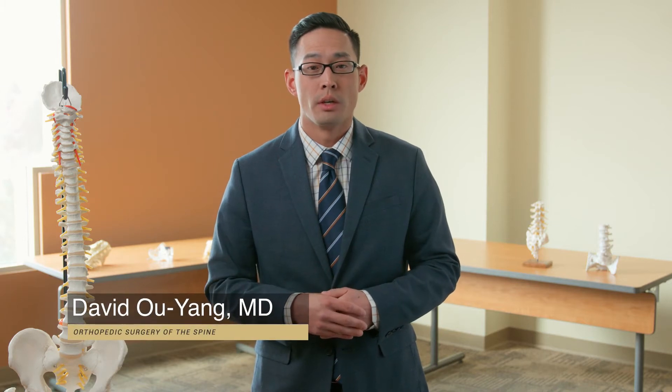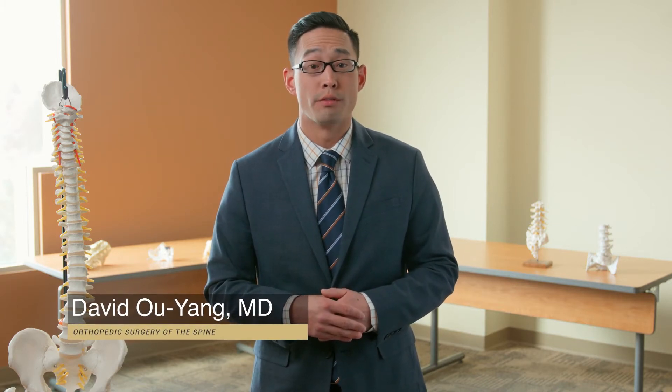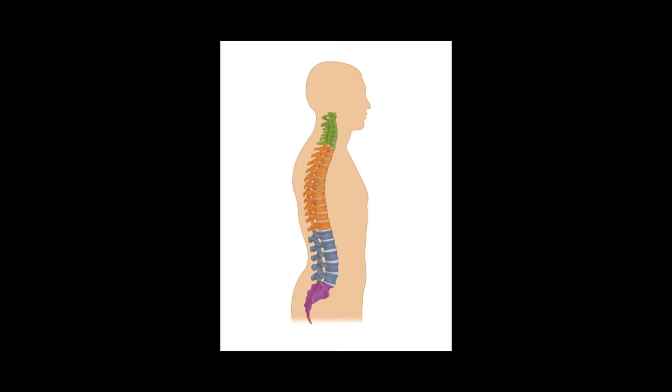To understand cervical myelopathy, it is important to understand the anatomy of the cervical spine. The spine is composed of separate vertebra stacked on top of each other in alignment. The vertebra within the neck form the cervical portion of the spine, represented here in green.